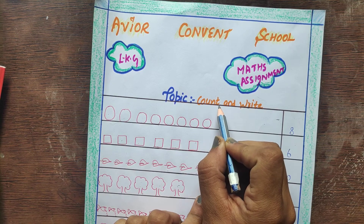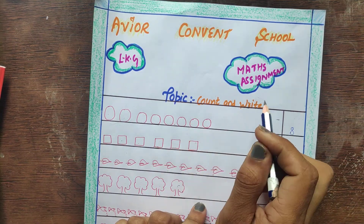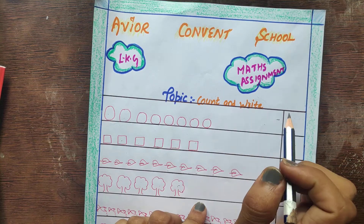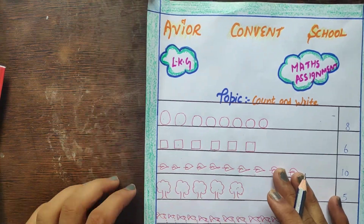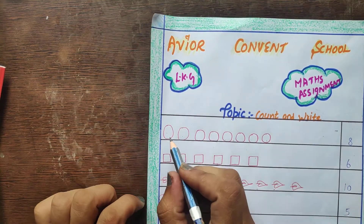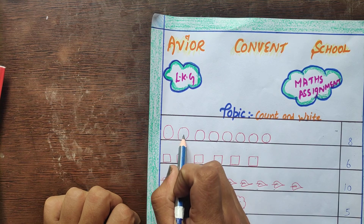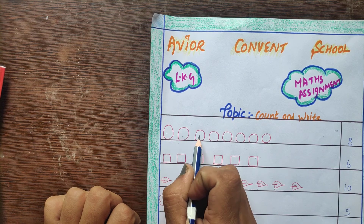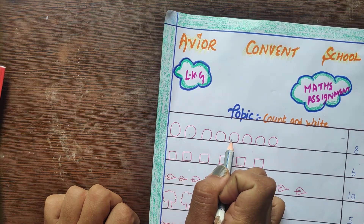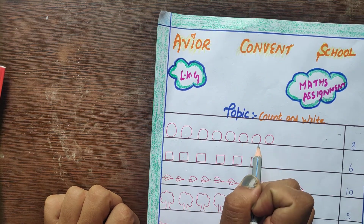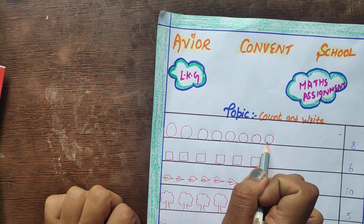You have to count how many circles and squares and write down the number in the box. Now we will go with the circles. 1, 2, 3, 4, 5, 6, 7, 8.